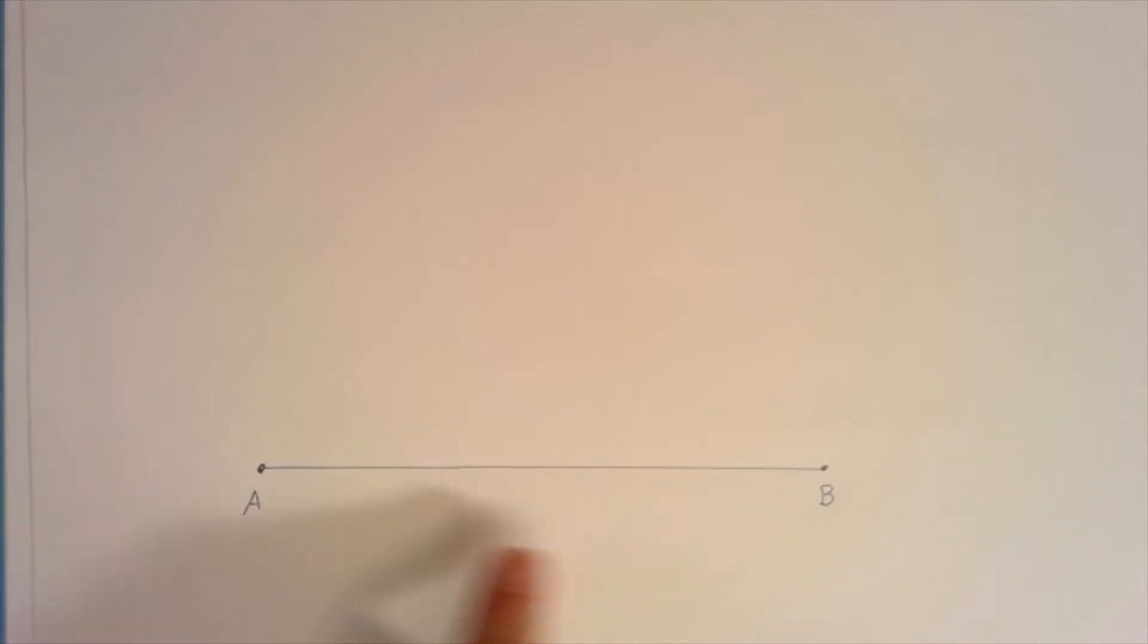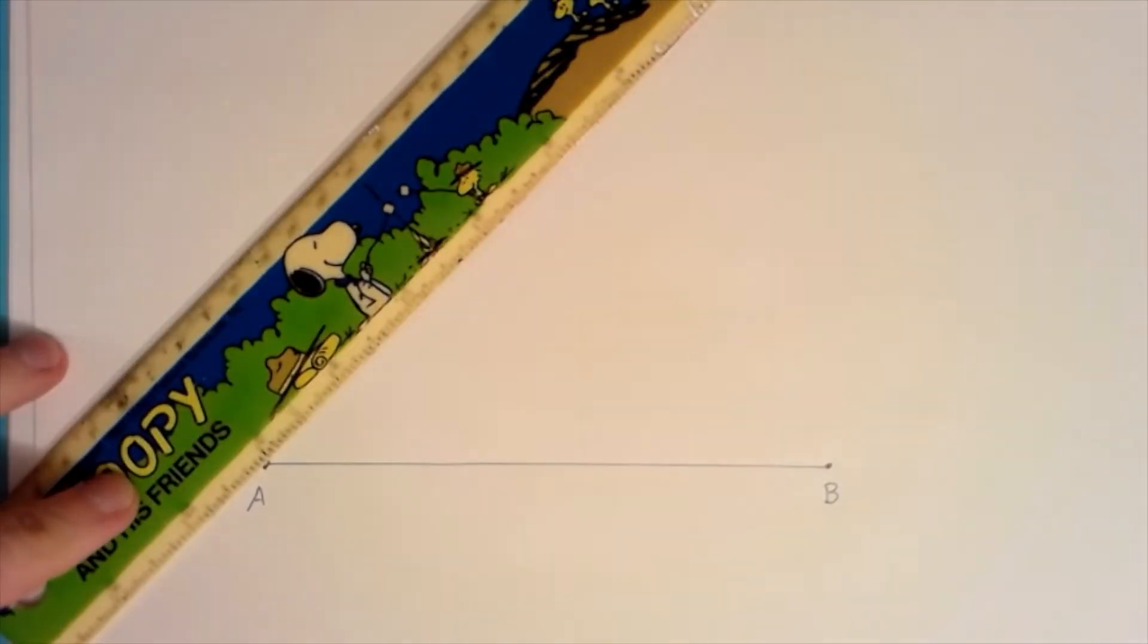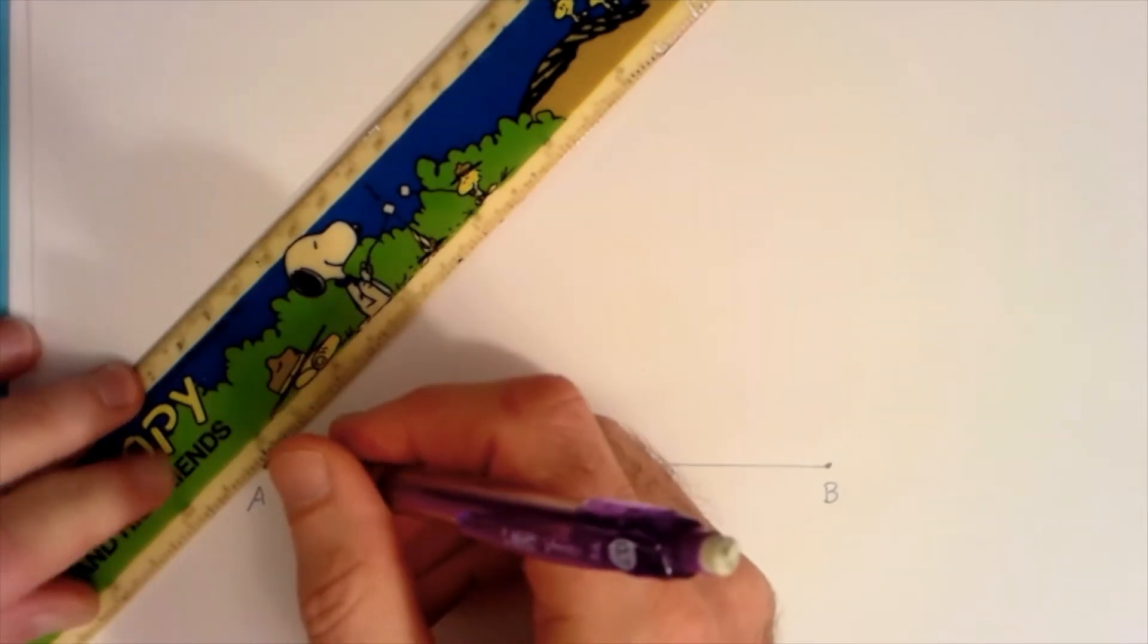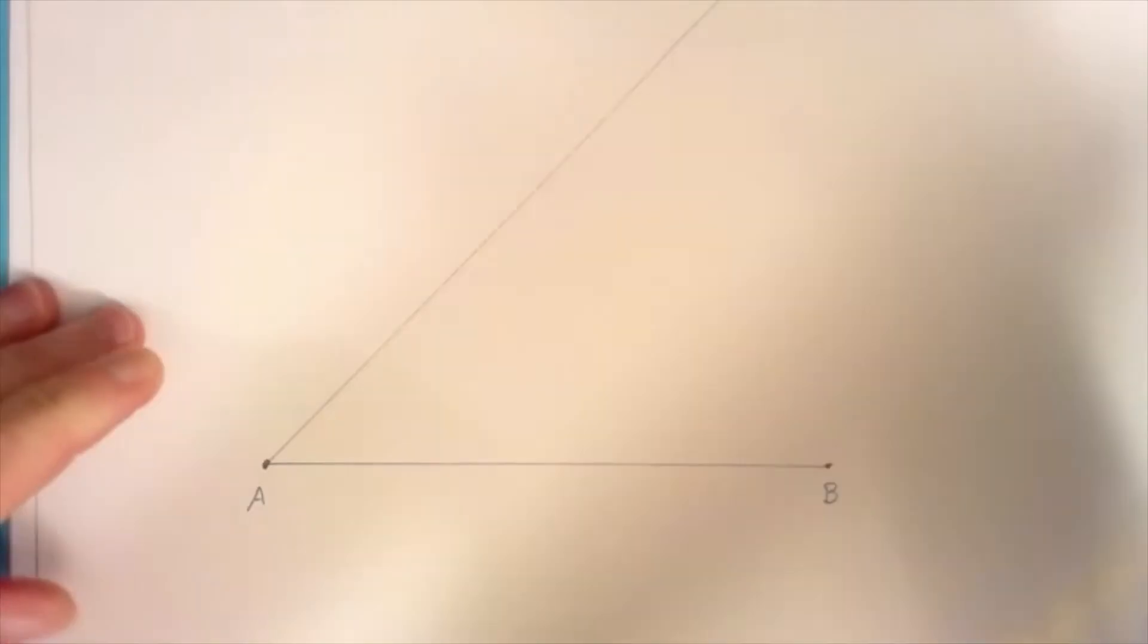So we want to dissect this into three equal parts and the first thing we're going to do is draw another line from A and we can make this at any angle that we want and we can make it as far as we want. So I'm just going to make it really far up the page here.